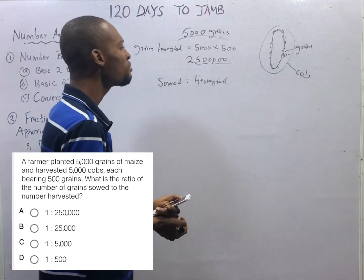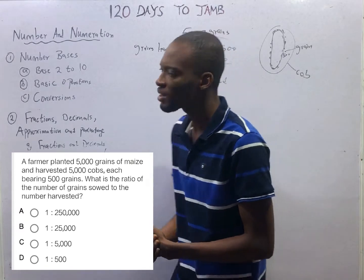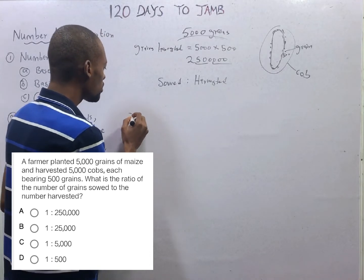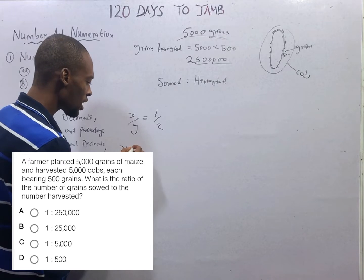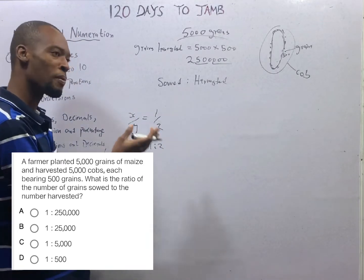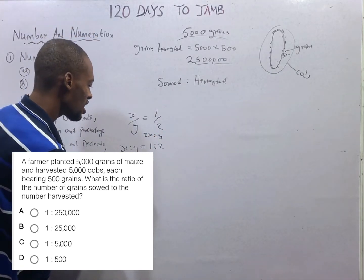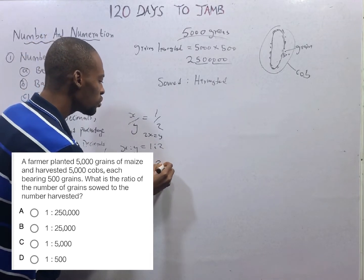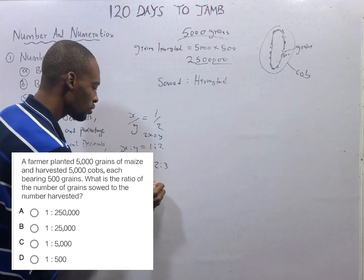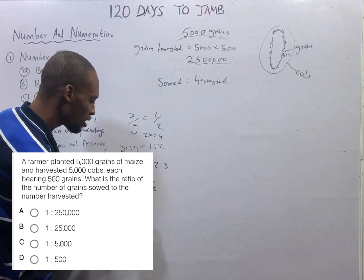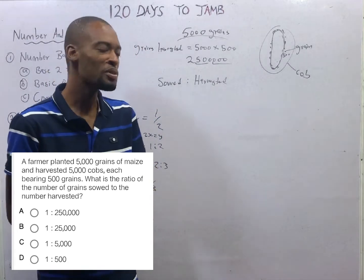Ratio and proportion: the difference is that ratio is usually in the form of an expression, while proportion is in the form of an equation. If two ratios are equal, they are proportional. For example, if S ratio Y equals 1 over 2, then S ratio Y equals 1 ratio 2, and cross-multiplying gives 2S equals Y. If S ratio 2 is proportional to 2 ratio 3, then S over 2 equals 2 over 3, so 3S equals 4 and S equals 4 over 3.